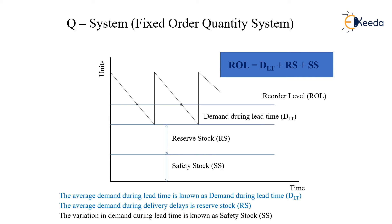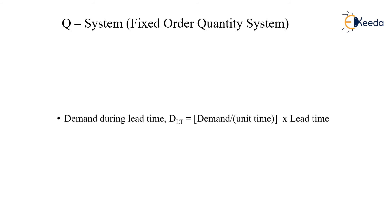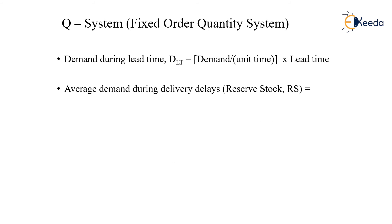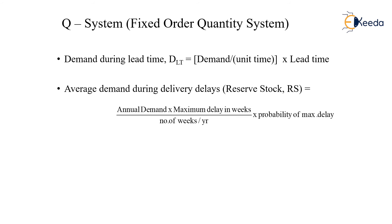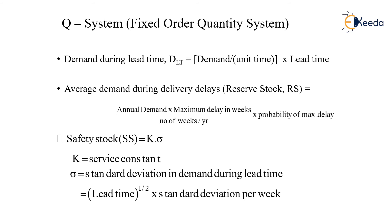The reorder level is equal to the demand during the lead time (DLT) plus the reserve stock plus the safety stock. The demand during the lead time is given by demand per unit time multiplied by the lead time. The reserve stock is given as the annual demand multiplied by the maximum delay in weeks, divided by the number of weeks in a year, multiplied by the probability of maximum delay. The safety stock is given as K multiplied by sigma, where K is the service constant and sigma is the standard deviation in demand during the lead time, equal to the square root of lead time multiplied by the standard deviation per week.